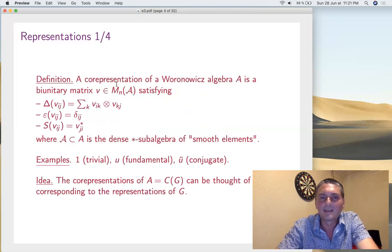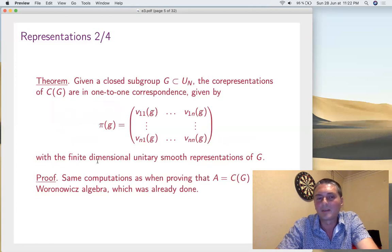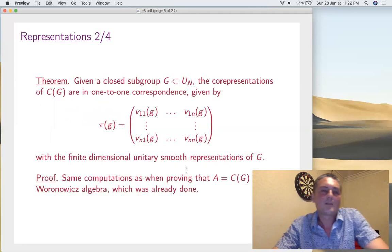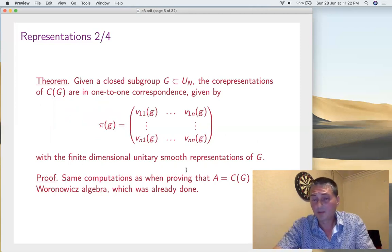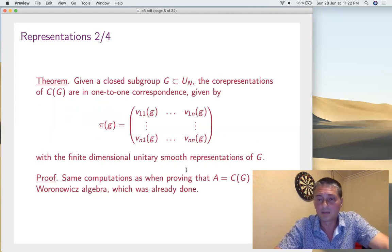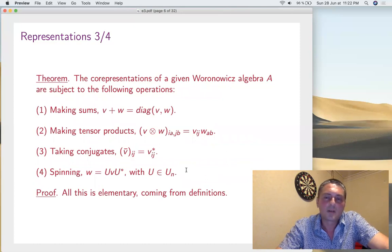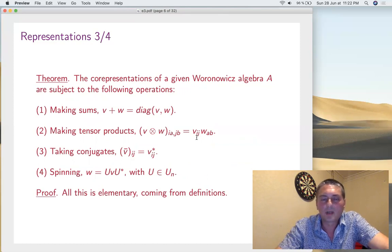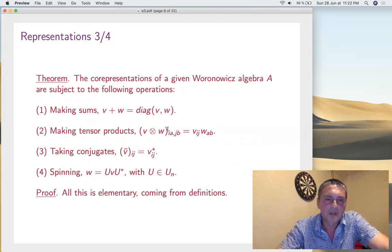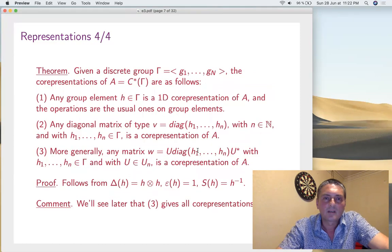Why is this true? These are exactly the computations from when we wanted to prove that C(G) is a Woronowicz algebra. It's not exactly the representations, but rather the matrices of coefficients. What can we do with them? We can take conjugates, put them on a diagonal — tensor products — and also spin by a unitary. The proof is trivial. So conjugates, products, and spinning all work.